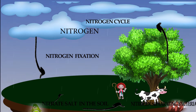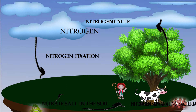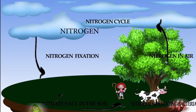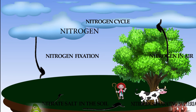Plants take nitrogen from their roots to grow and to produce fruits, which humans and animals eat. When animals and humans die, they decompose and release nitrogen back into the air. When you next farm, remember that you are helping maintain the nitrogen cycle.